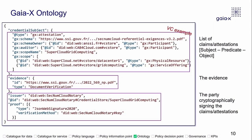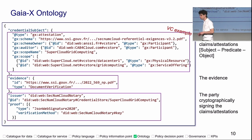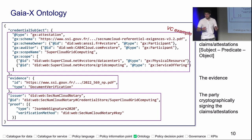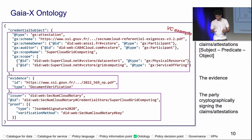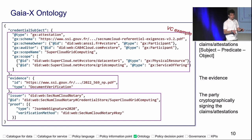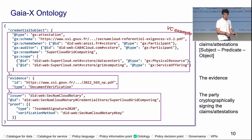How does the ontology translate in practice? Here is a verifiable credentials example — an extract from a working one. You have a credential subject with a list of claim attestations expressed as subject-predicate-object linked data. You have evidence, because here we are talking about an attestation — a SecNumCloud certification specifically, for those in France. And you have the issuer: the party that cryptographically takes responsibility to sign the claims.